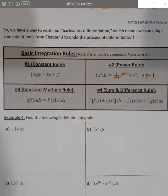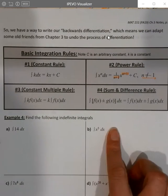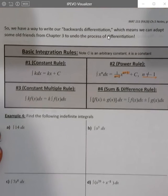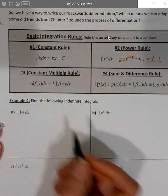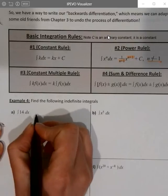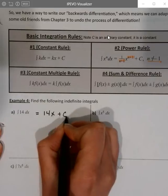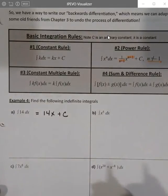So let's use these first four rules here to do some antiderivatives or indefinite integrals. So the first one, I want the integral of 14 dx. It's a constant. And so it's going to integrate into 14x plus c. That's it. 14x plus c.